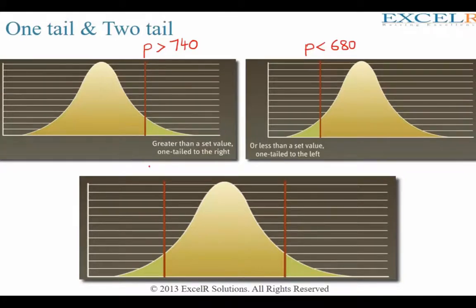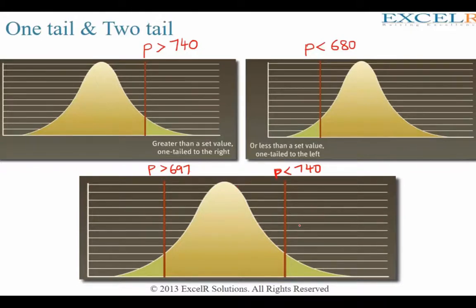If you want to find out the probability that a student's GMAT score happens to be greater than 697 and less than 740, this is called a two-tail representation, because you want greater than and less than — you are putting in two conditions. Hence it is called two tail.